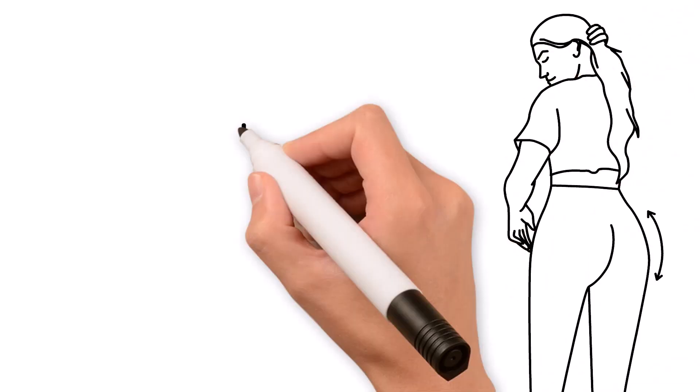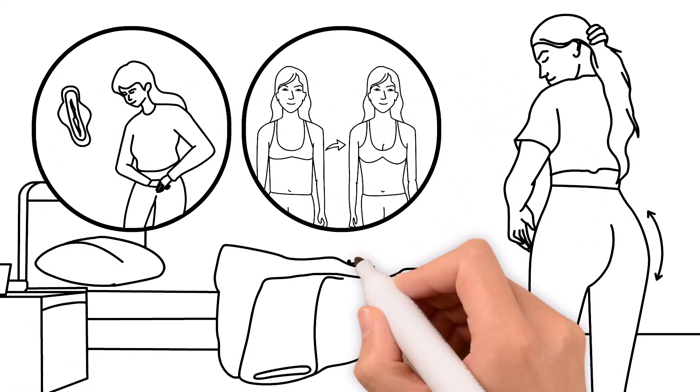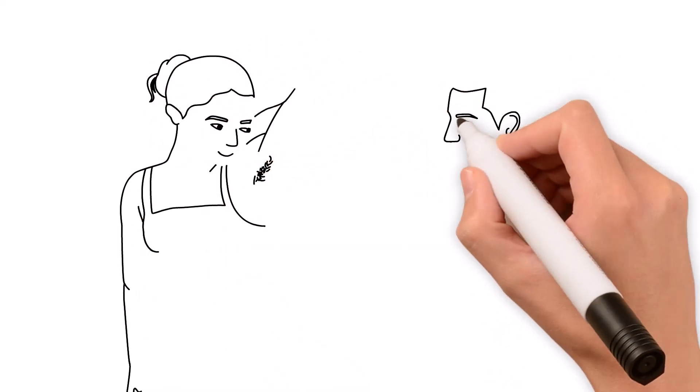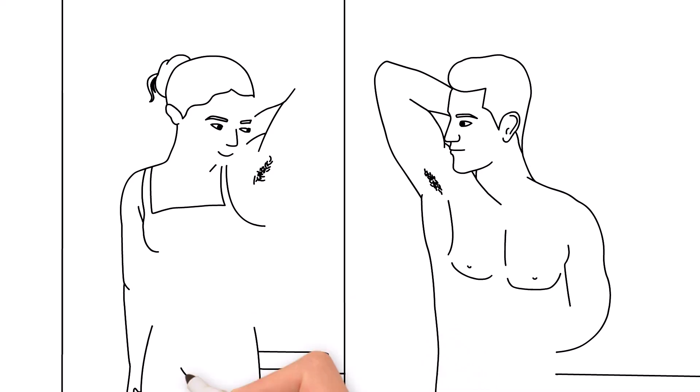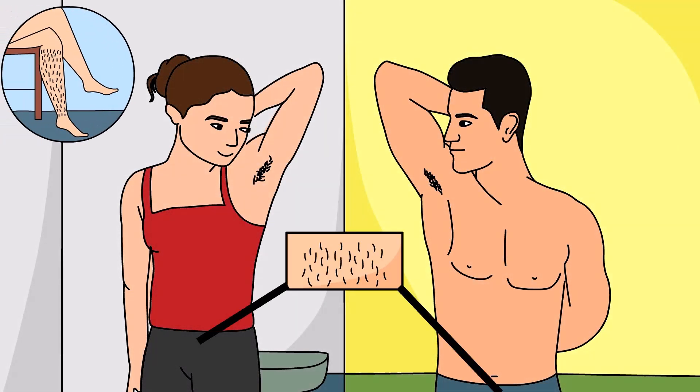For girls, your hips may get curvier. You'll also start developing breasts and menstruating. As if the changes to your body weren't enough, both guys and girls will also start to notice hair popping up in new places, such as around your armpits, your private parts, and legs and arms.